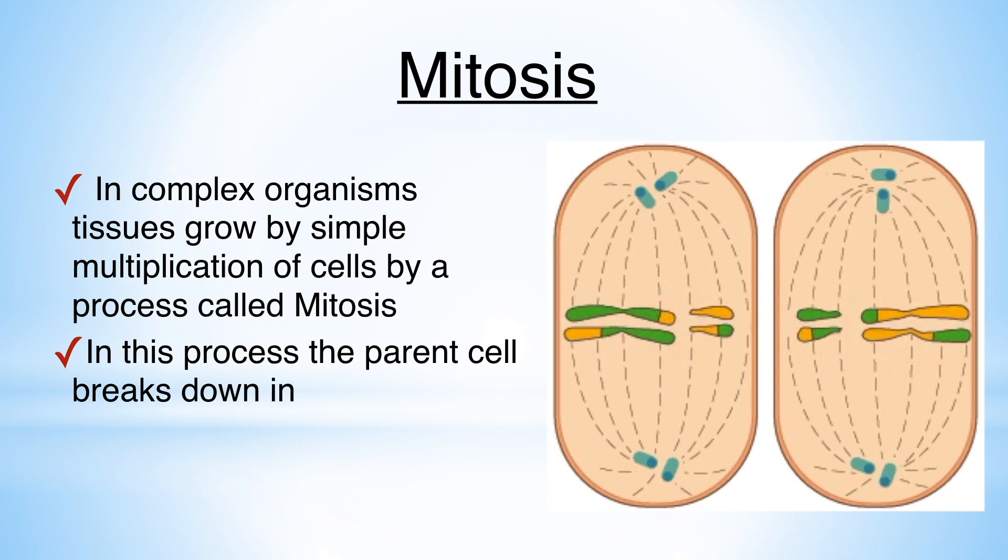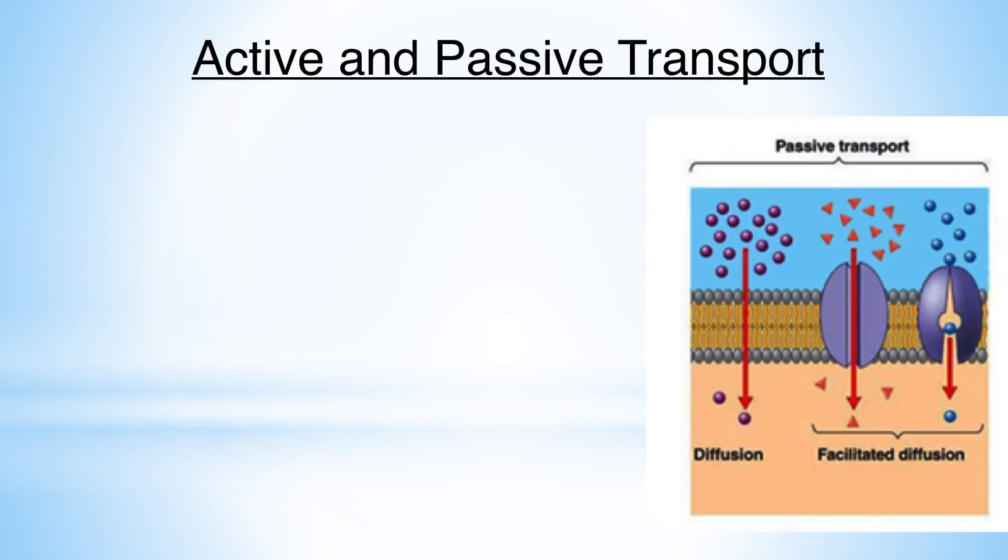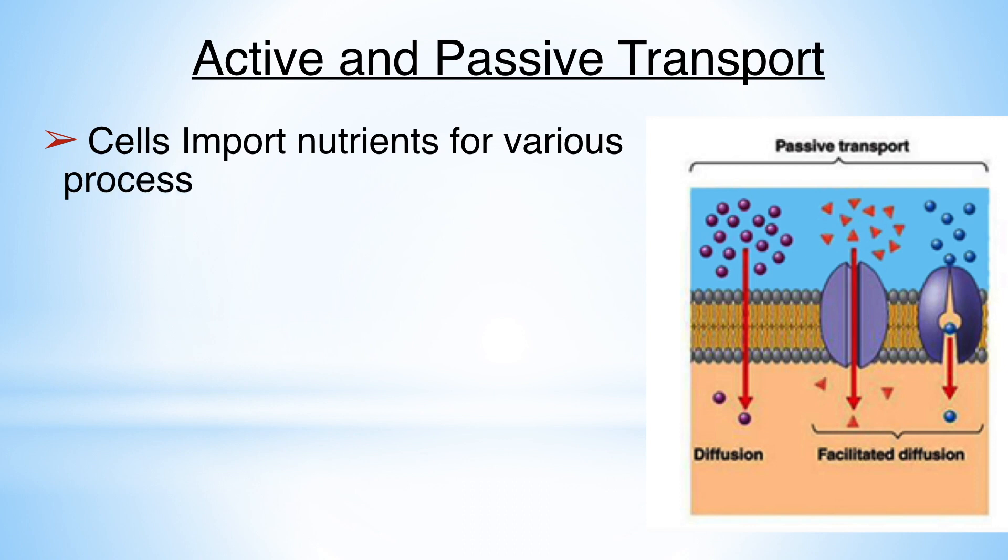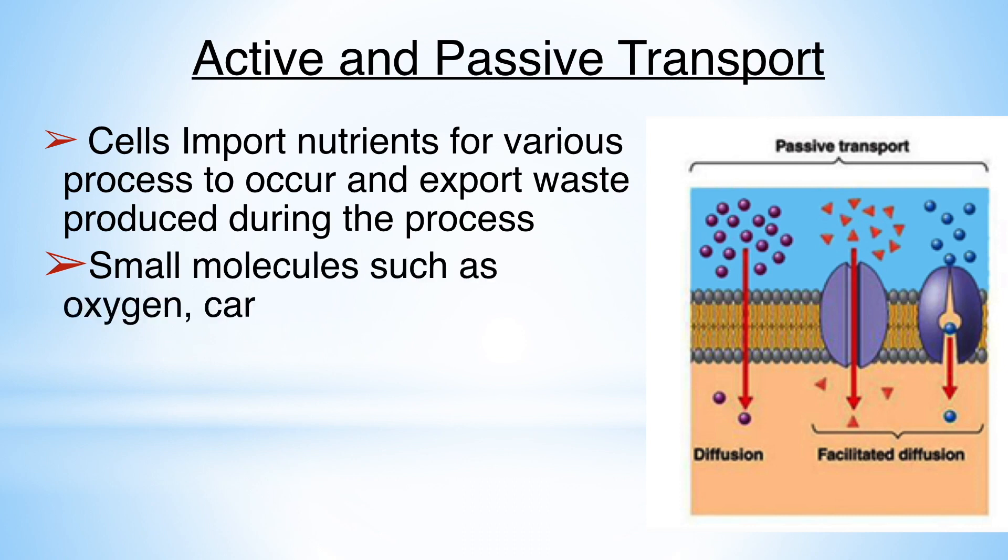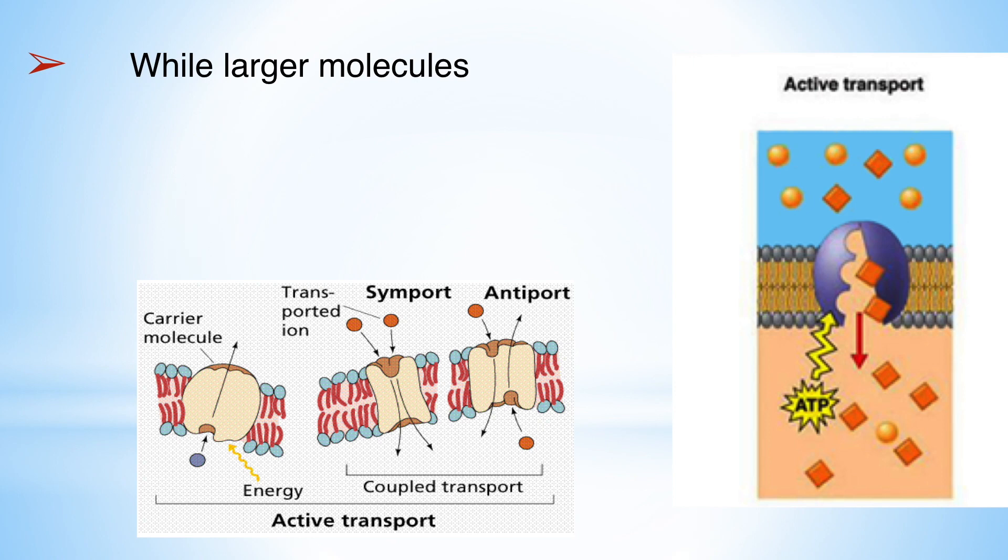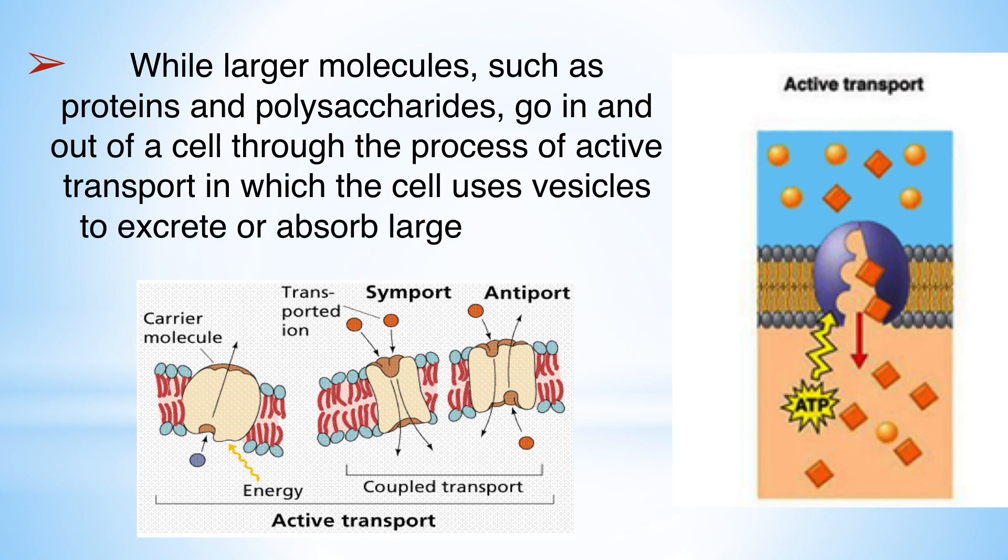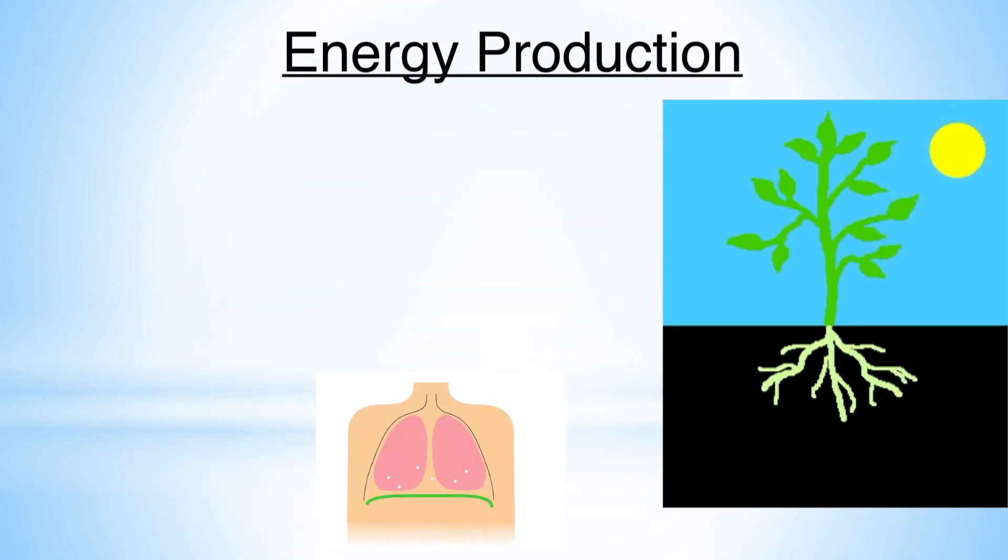Active and passive transport. Cells import nutrients for various processes to occur and export waste produced during the process. Small molecules such as oxygen, carbon dioxide, and ethanol get across the cell membrane through the process of simple diffusion, which is referred to as passive transport. While larger molecules such as proteins and polysaccharides go in and out of a cell through the process of active transport, in which the cell uses vesicles to excrete or absorb larger molecules.